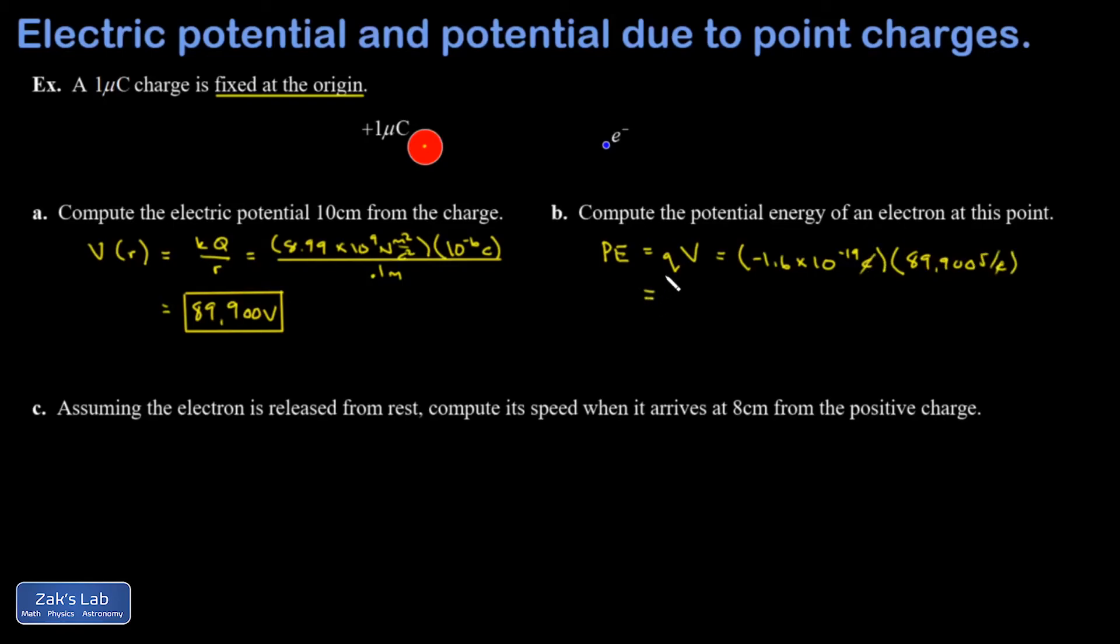I'm going to get a negative potential energy. And this comes out to negative 1.44 times 10 to the negative 14 joules.